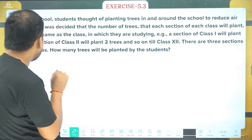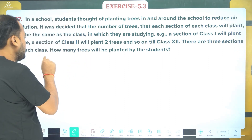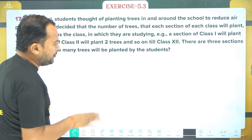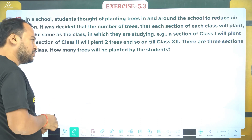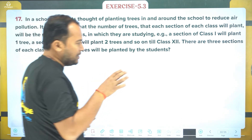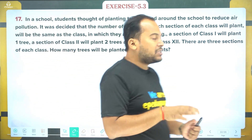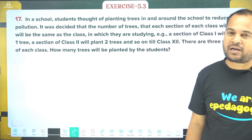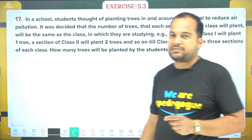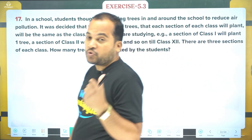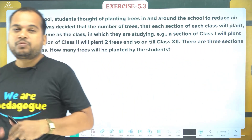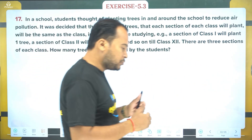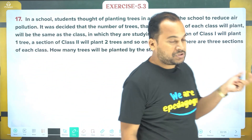There are three sections of each class. How many trees will be planted by the students? The total for each class is three sections. Now let's understand the question.